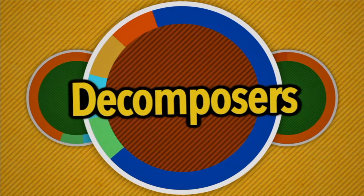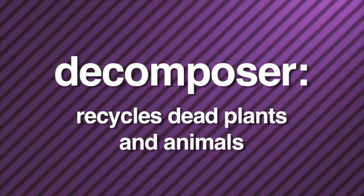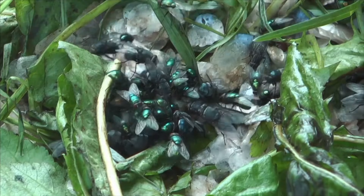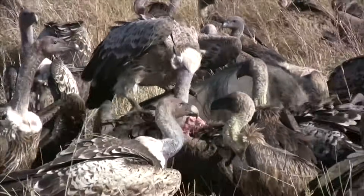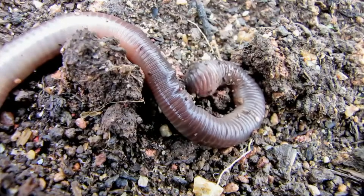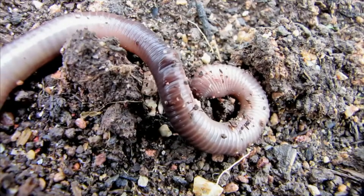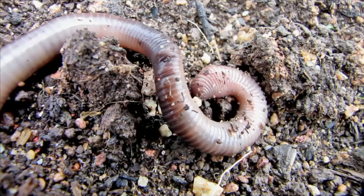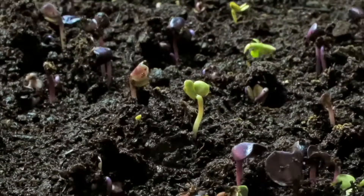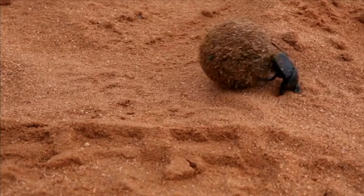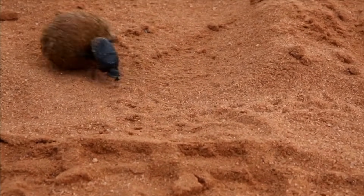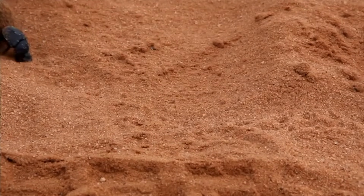Decomposers. Now let's talk about decomposers. A decomposer recycles dead plants and animals. Sounds gross, but they are a very important part of the food chain. When plants and animals die, they become food for decomposers. An example of an animal decomposer is an earthworm. Earthworms eat dead plants and animals. The waste that earthworms leave behind is rich in nutrients. Nutrients help plants to grow. Some insects, like the dung beetle, are decomposers. They collect animal droppings and form them into a ball. The dung beetle then places the ball in an underground nest to provide nutrients for its growing young.